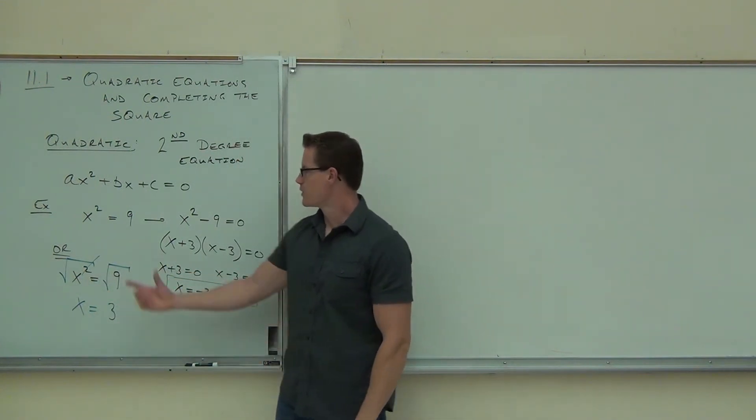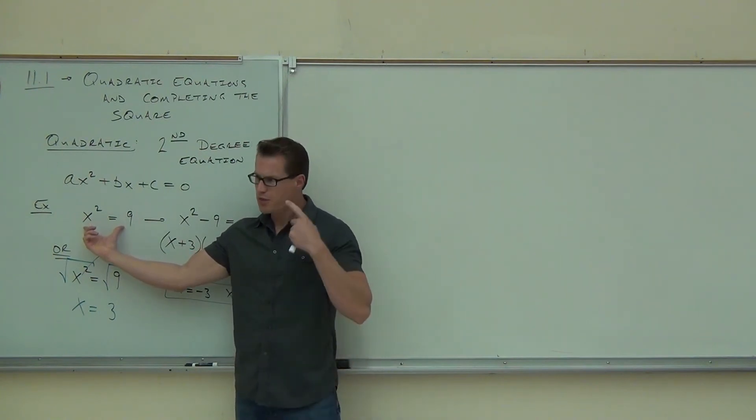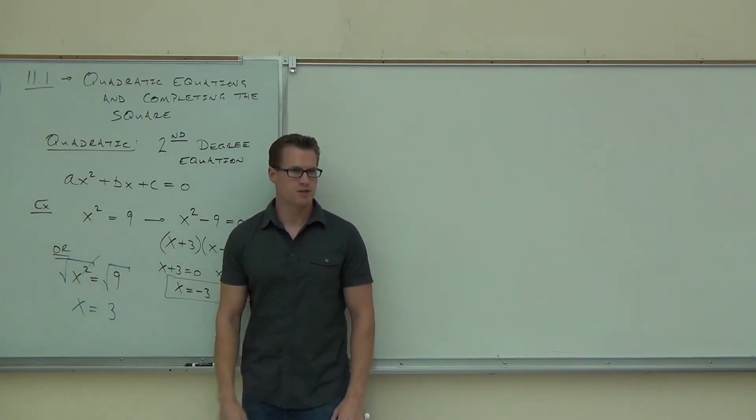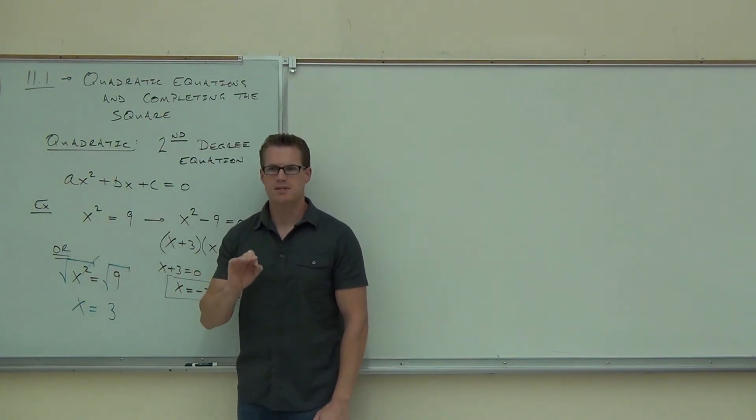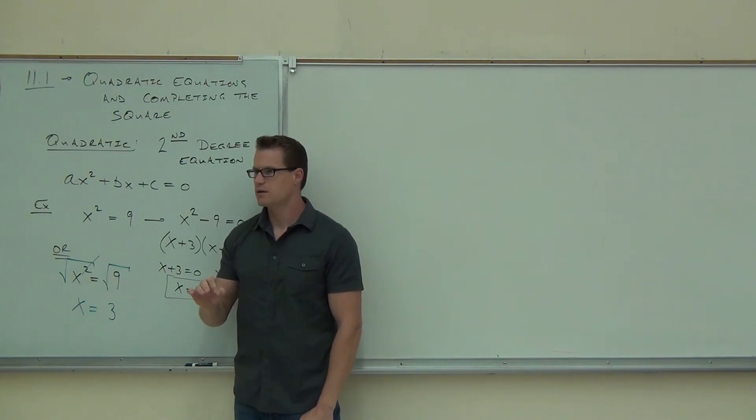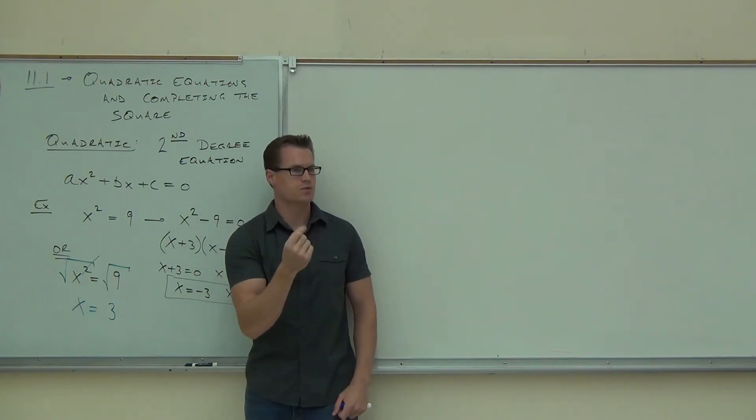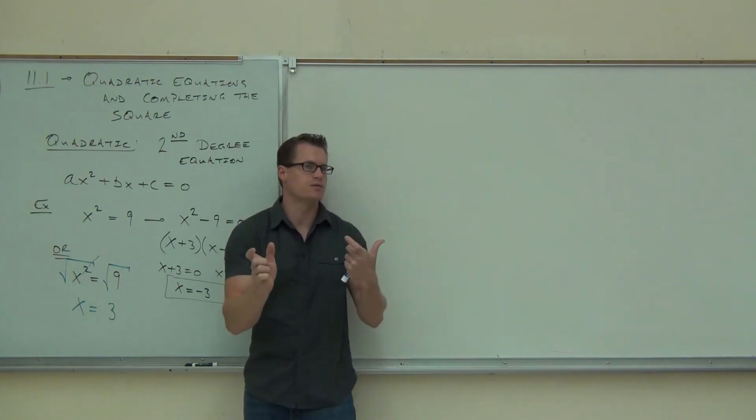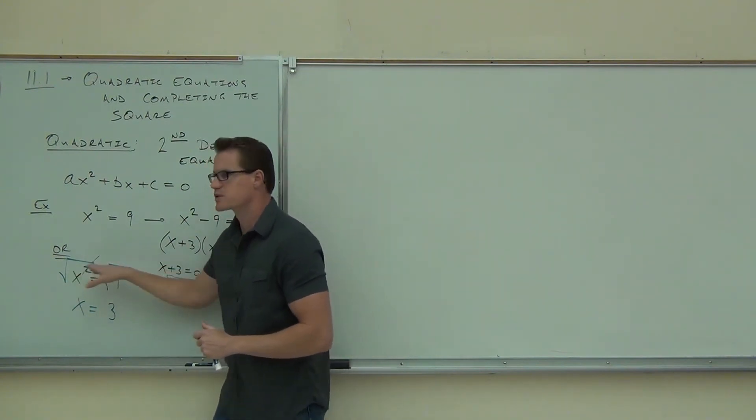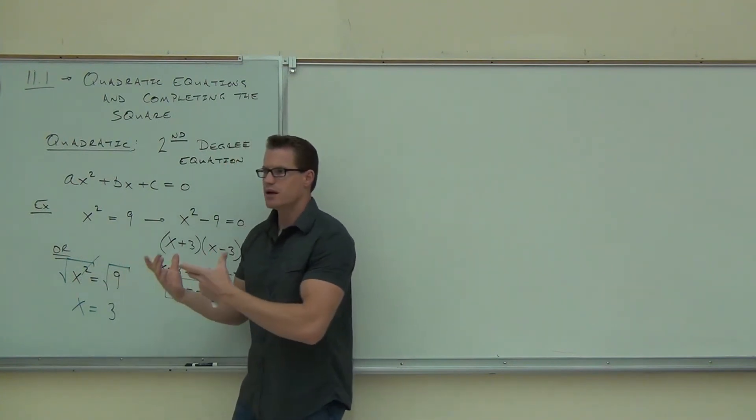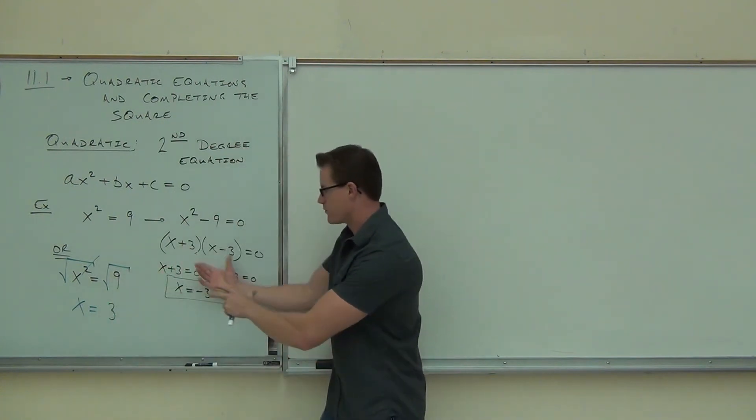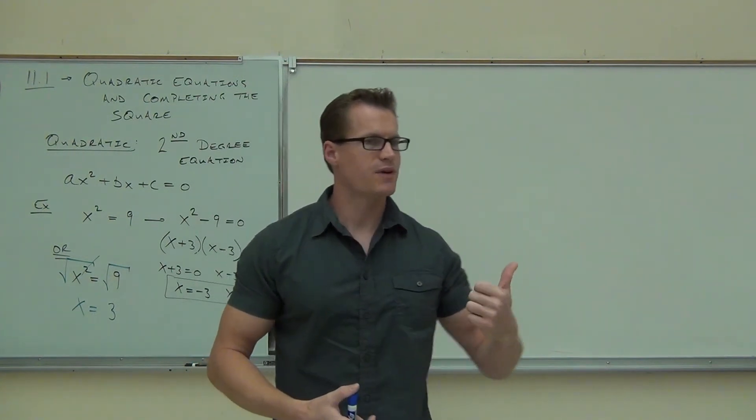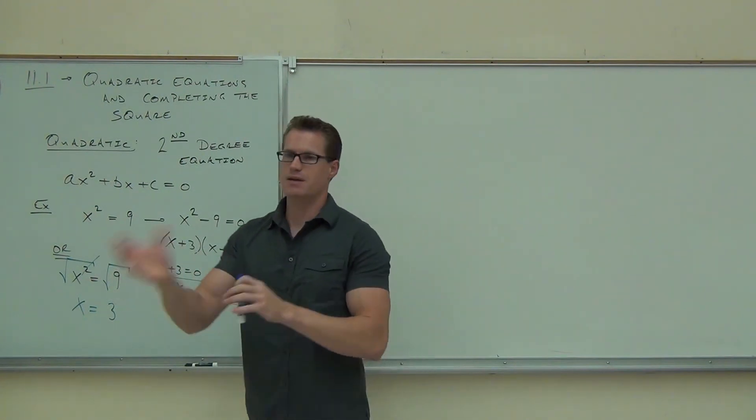We're going to talk about that right now. If you think about our original example, x squared equals 9. If you just think about the solutions, you know that 3 is going to work, right? Because 3 squared is 9. You also know that negative 3 is going to work because negative 3, when I square it, what happens to that negative? It goes away. Are you with me? Negative 3 times negative 3, that negative is gone. Because when we square something, the negative is eliminated. Because you're multiplying a negative times a negative, that becomes a positive.